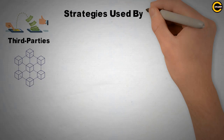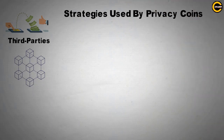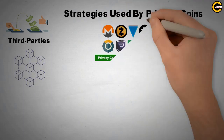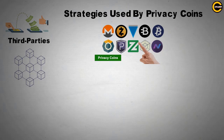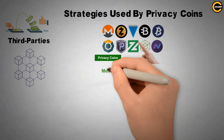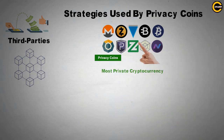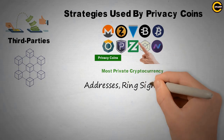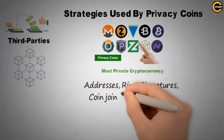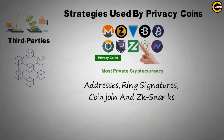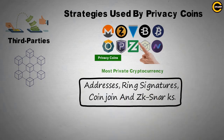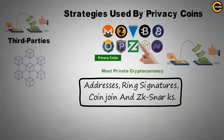Strategies used by privacy coins to effectively preserve anonymity and untraceability. Privacy coins employ a variety of different strategies to become the most private cryptocurrency, the most popular of which include stealth addresses, ring signatures, coin join, and zk-snarks. Stealth addresses require a sender to generate a new address for every transaction sent in order to avoid being linked to a receiver.